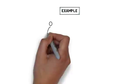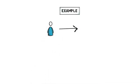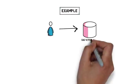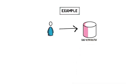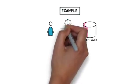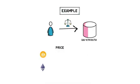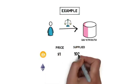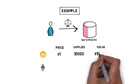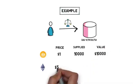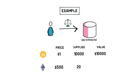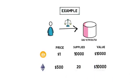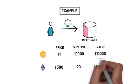The easiest way to fully understand impermanent loss is to go through a quick example. Let's assume an LP provides liquidity to a DAI/ETH Uniswap 50-50 pool. To supply liquidity to a 50-50 pool, the LP has to provide an equal value of both tokens. DAI price: $1, supply 10,000 DAI (value $10,000); ETH price: $500, supply 20 ETH (value $10,000). The value of both tokens is the same.